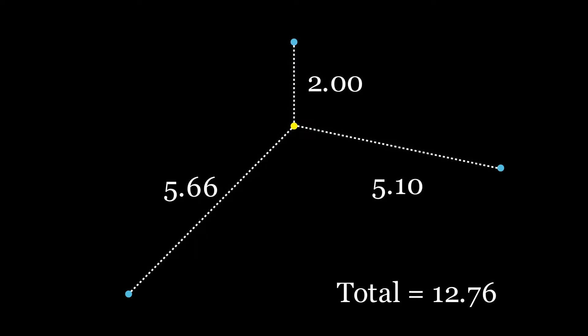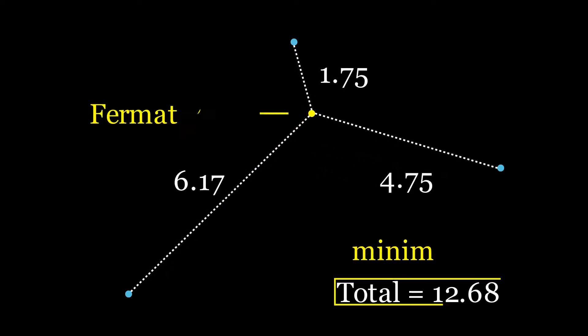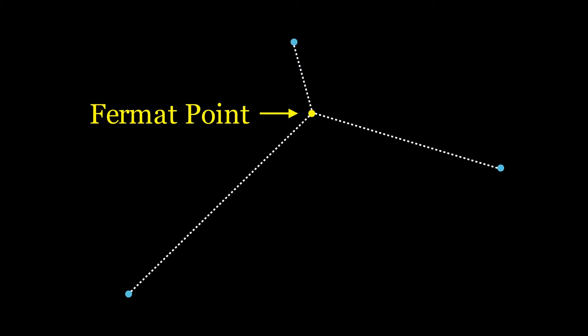The Fermat point is one such that this distance is as small as possible. We can ignore the distance number for now. Just remember that this fourth point, the Fermat point, should always be at the spot where the total distance is minimized.